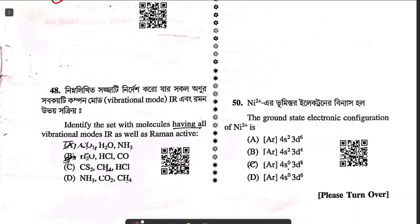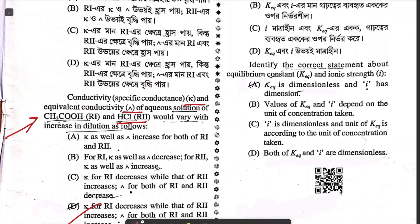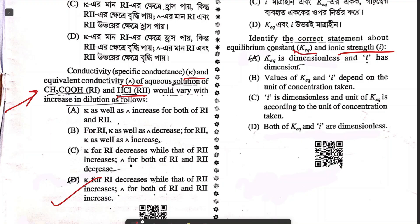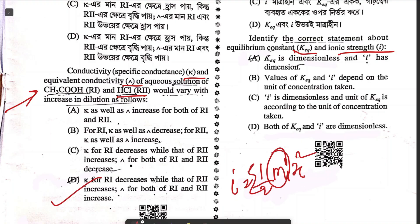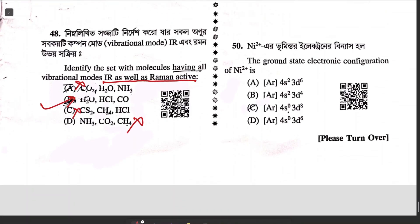Question forty-eight: identify molecules where all vibrational modes are both IR and Raman active. Generally, IR-active modes are Raman-inactive and vice versa. However, for molecules with a permanent dipole moment, all vibrational modes are both IR and Raman active. CO2 and CH4 have no permanent dipole moment, so only option B remains. Question forty-nine: equilibrium constant is dimensionless; ionic strength I = ½Σmᵢzᵢ² has dimensions — so answer A. Question fifty: ground state electronic configuration of nickel — option C.